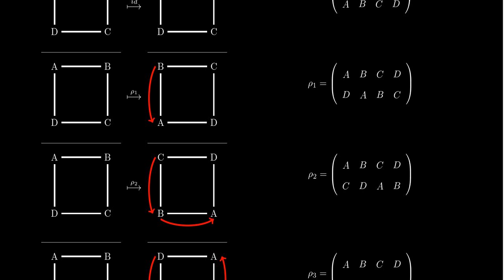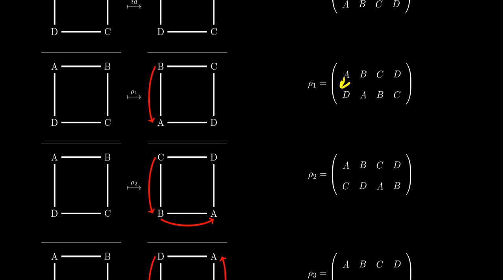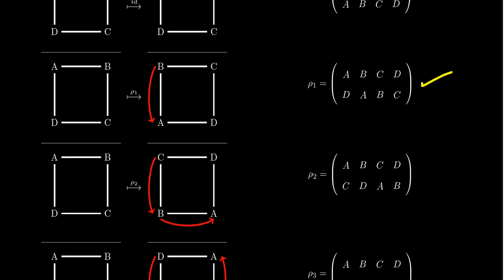The second symmetry of the square, we will call row 1, which corresponds to a rotation counterclockwise by 90 degrees. So A is going to go to D, D is going to go to C, C is going to go to B, and B is going to go to A. If we write this in permutation notation: A goes to D, B goes to A, C goes to B, and D goes to C, as illustrated on the screen. We'll call that row 1.